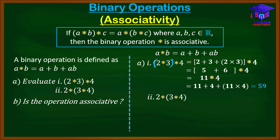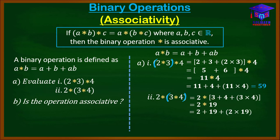Now for part A(ii): 2★(3★4). We evaluate the bracket first with A=3 and B=4, giving us 3+4+(3×4) = 3+4+12 = 19. So we have 2★19. Now with A=2 and B=19, we get 2+19+(2×19) = 2+19+38 = 59.